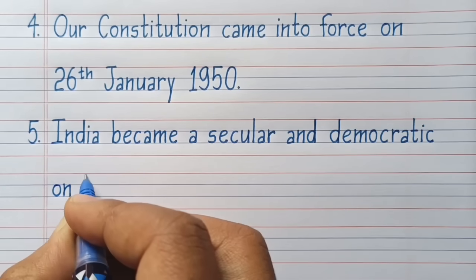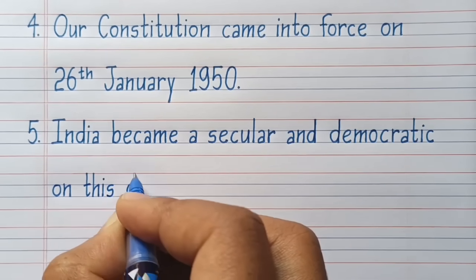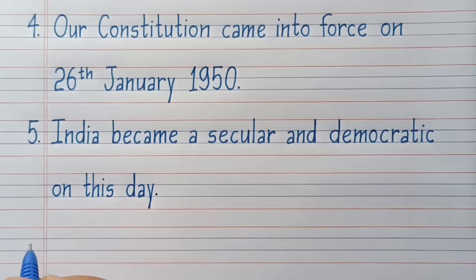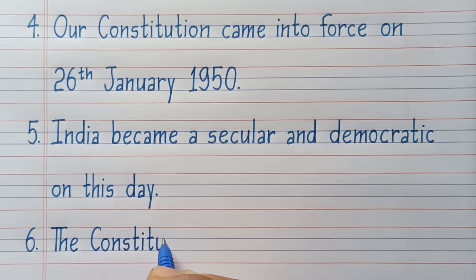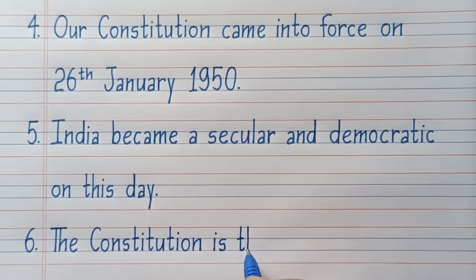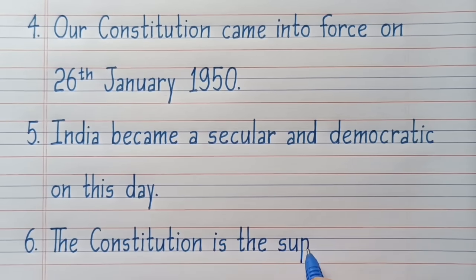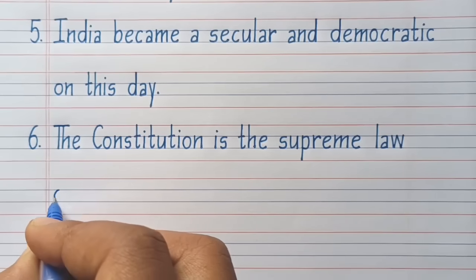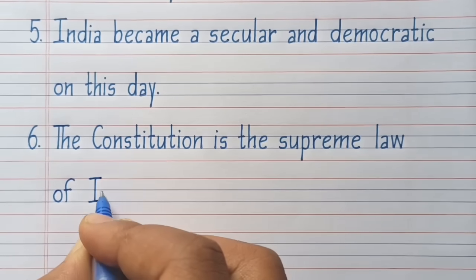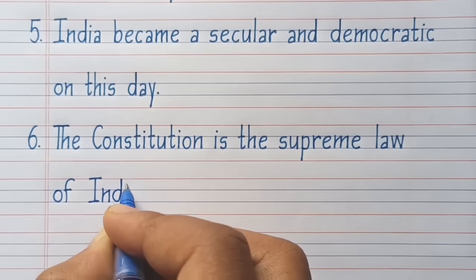Fifth line: India became a sovereign and democratic republic on this day. Sixth line: The Constitution is the supreme law of India.